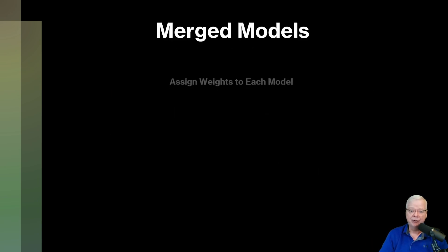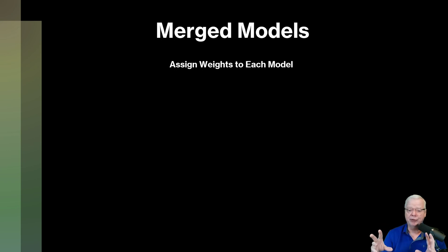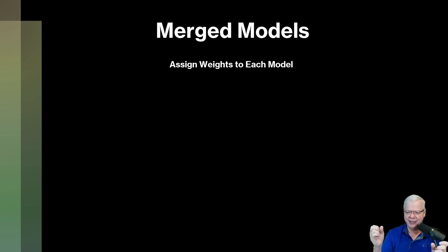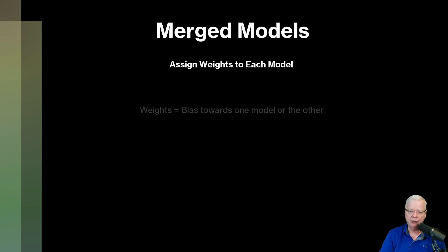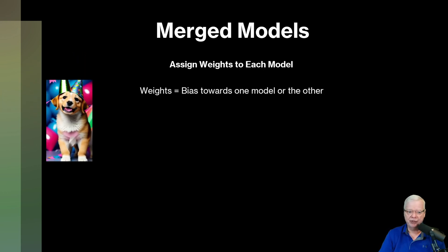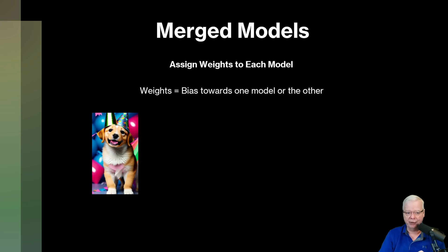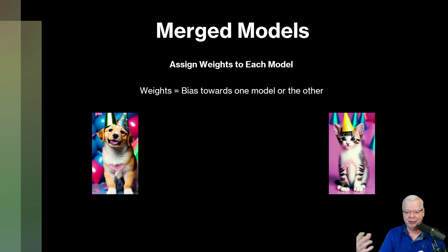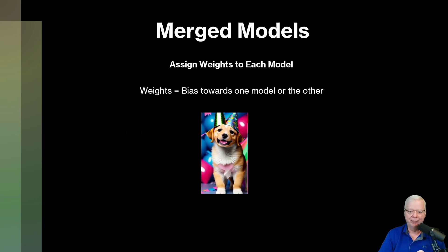Next, we have merged models. When you merge models, you assign a weight to each one. It's very similar to what we did with fine-tuned models, but instead of focusing the model, you're adding more functionality to it. For example, if we start off with our model of dogs in party hats and we want to add some cats in party hats, we can take those two models and merge them together. Now you have a chance to create both dogs and cats in party hats.